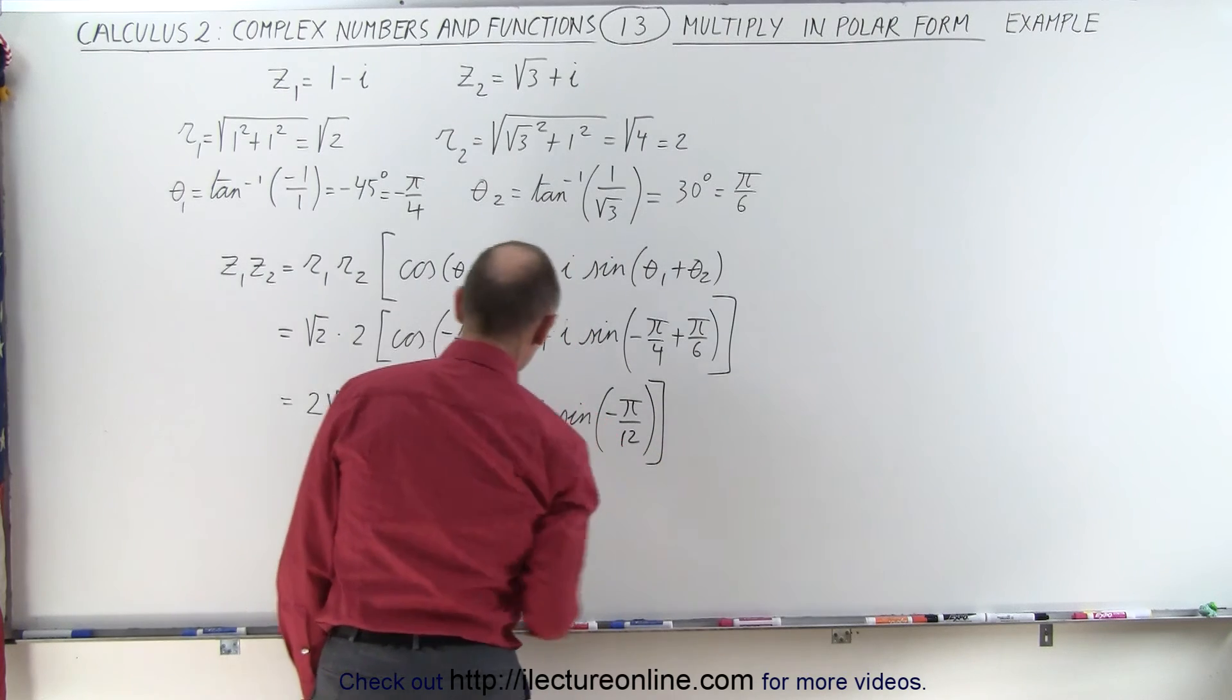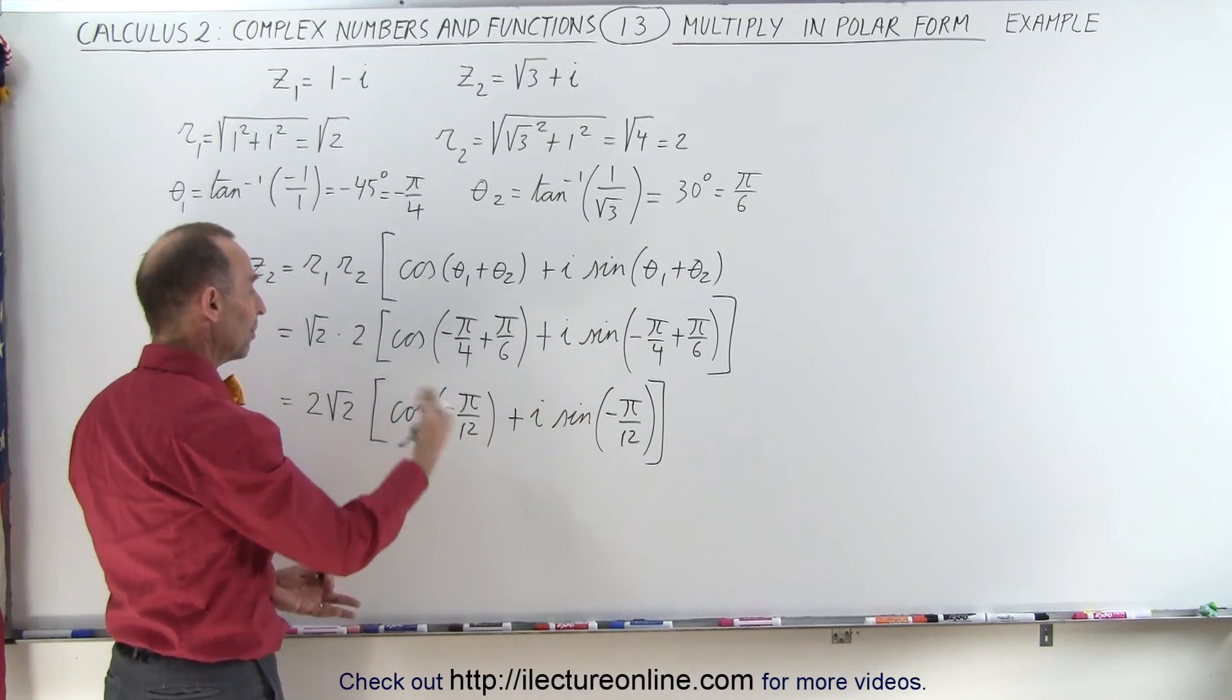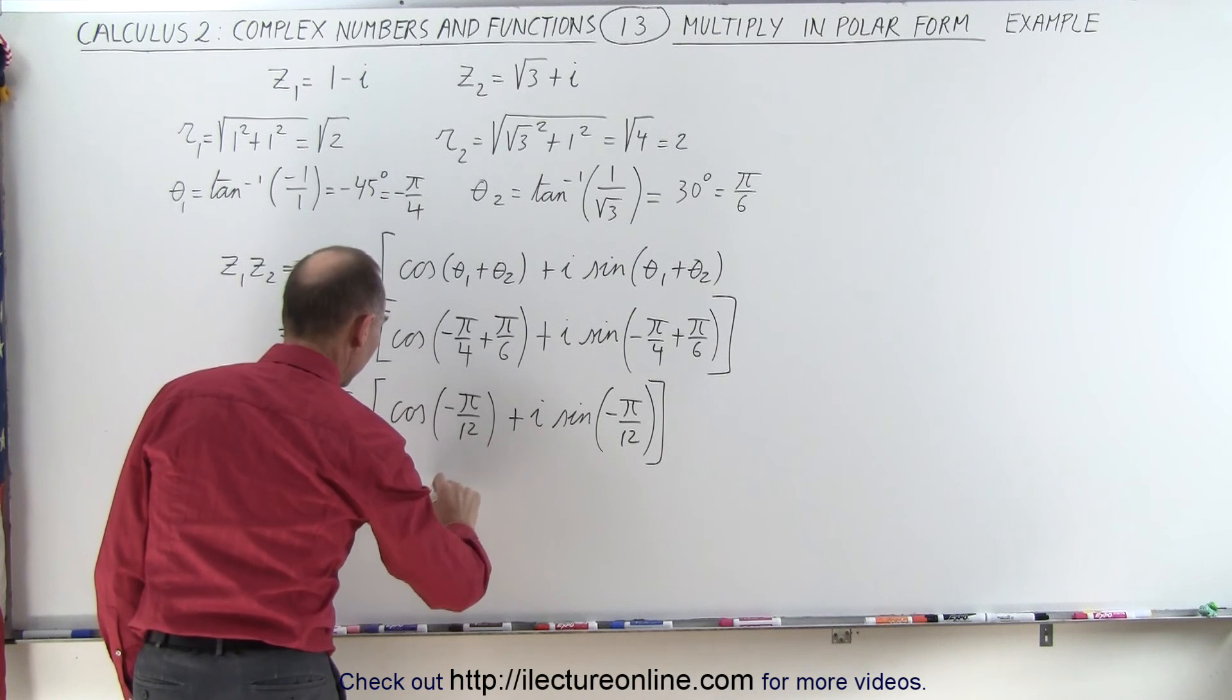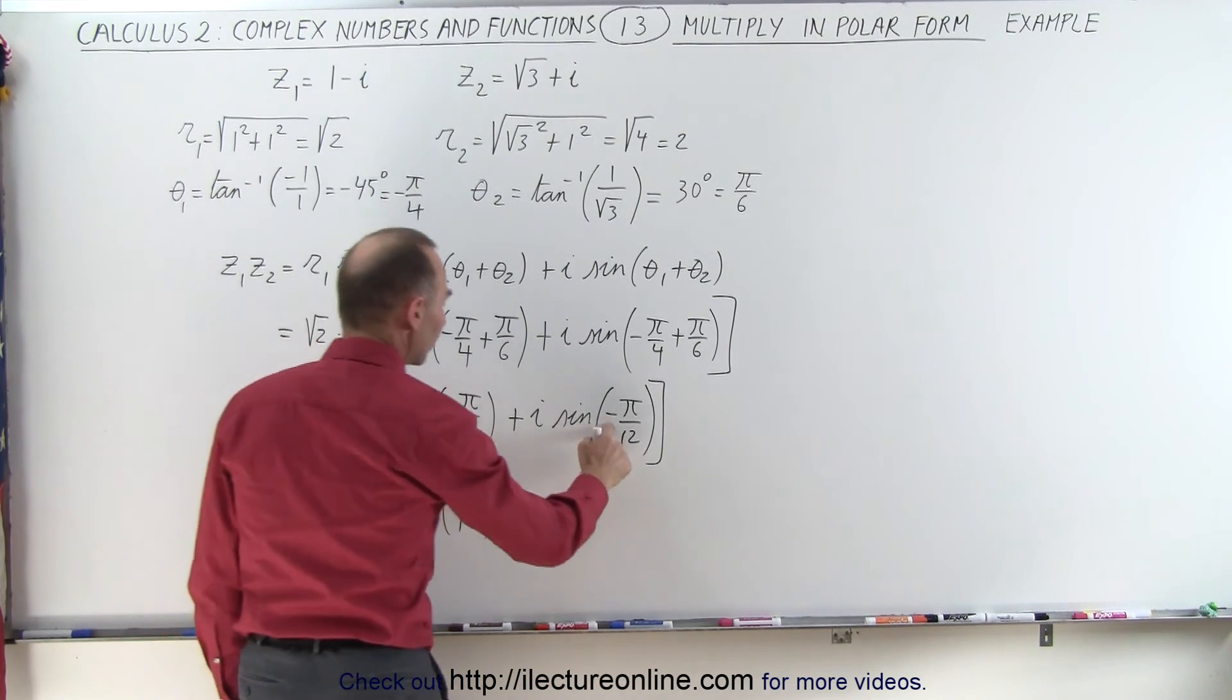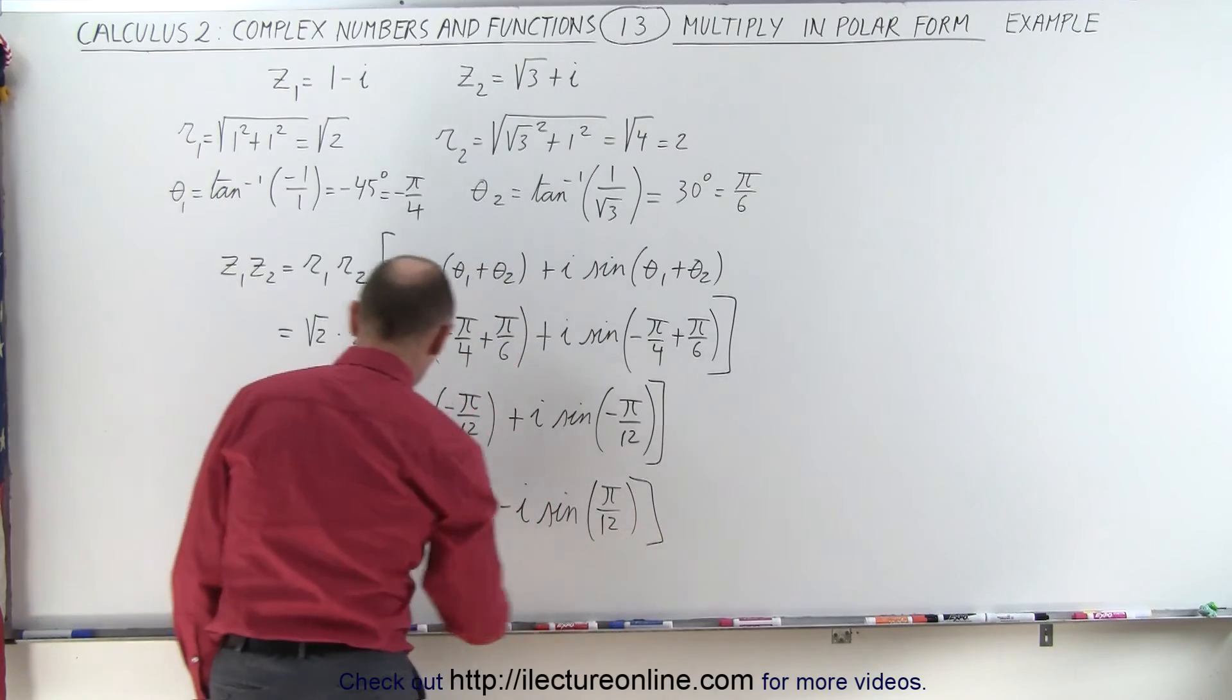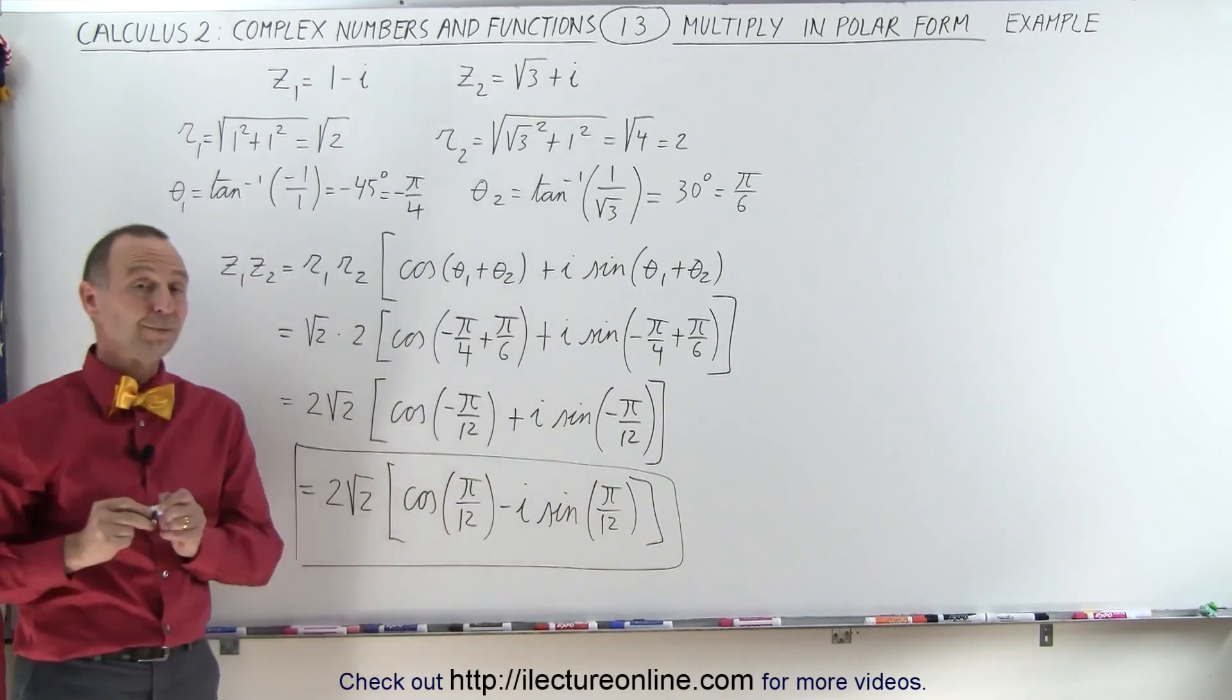And of course we can simplify that because the cosine of a negative angle is the same as the cosine of a positive angle, so this could be written as 2 times the square root of 2 times the cosine of pi over 12, and then we can transfer the negative over here, minus i times the sine of pi over 12, like that, and that would be the end result of the product when it's in polar form.